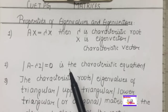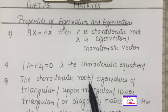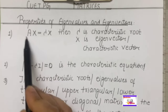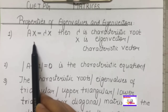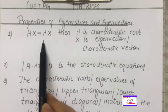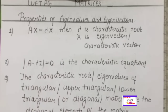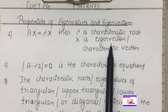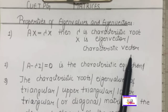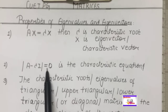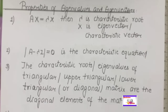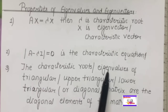So these are all names for the same concept: characteristic roots, latent roots, eigenvalues. λ is the characteristic root, x is the eigenvector — also called characteristic vector. The equation |A − λI| = 0 is the characteristic equation, and λ represents the characteristic roots or eigenvalues.